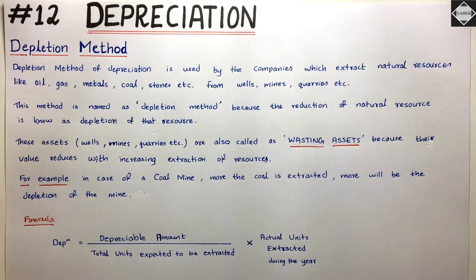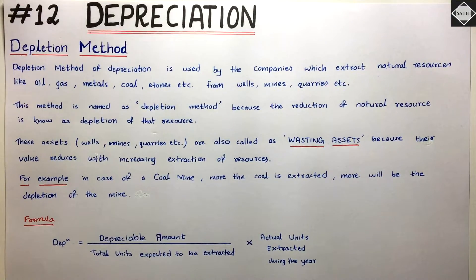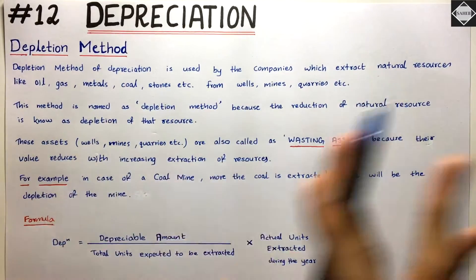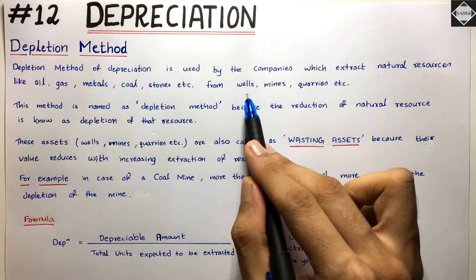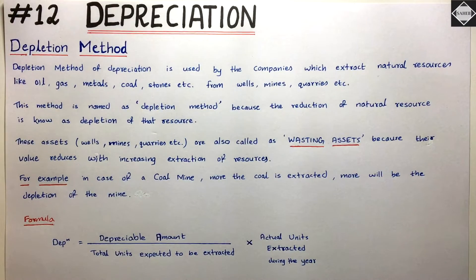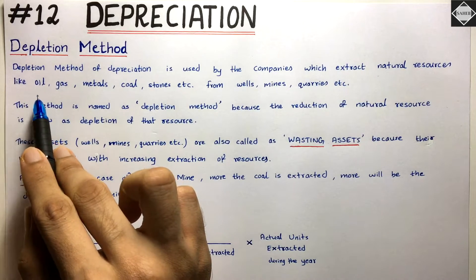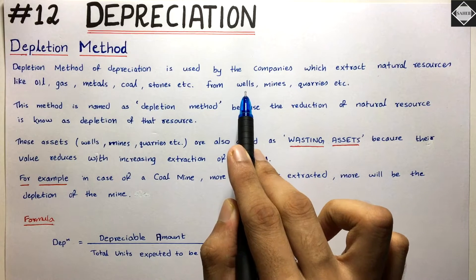There has to be a proper source from which they can extract natural resources. For example, an oil company — how do they extract oil? They have technology, machines, scientists, but the source would be the wells which they dig. They do drilling in the ground and extract the oil. From the accounting perspective, oil is meant for resale — that's their inventory — and the well will be their asset, so you charge depreciation on those wells.